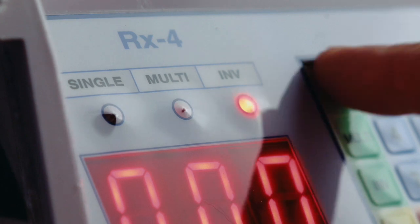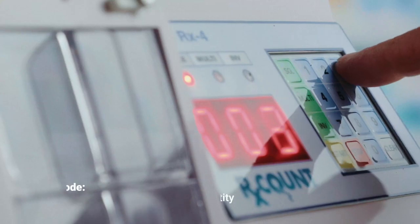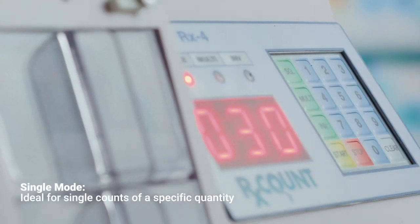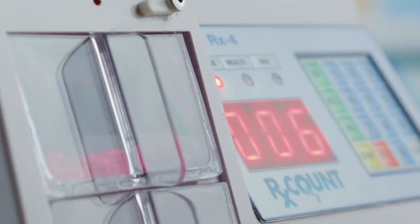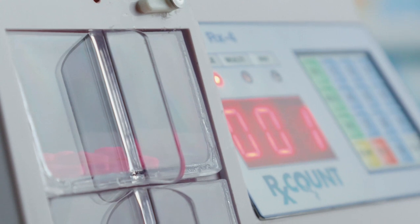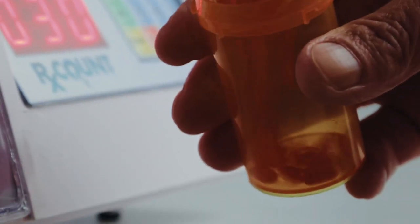Select your counting mode on the keypad. Single mode is for counting a specific quantity of pills that will dispense into the top collection tray. Select the desired quantity on the keypad. When the top tray is removed, any excess pills will drop into the bottom tray for quick return to the bottle.